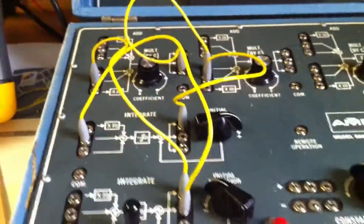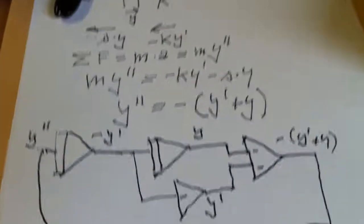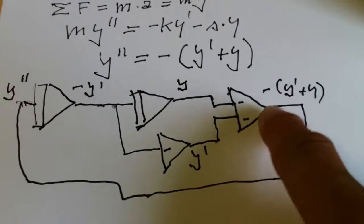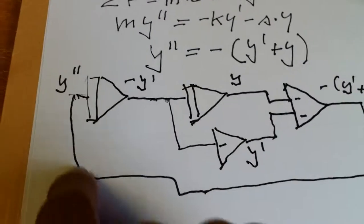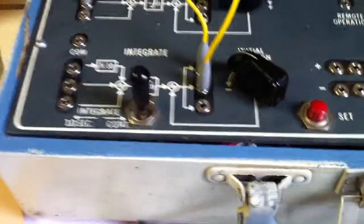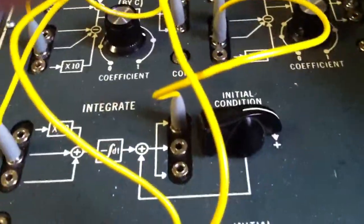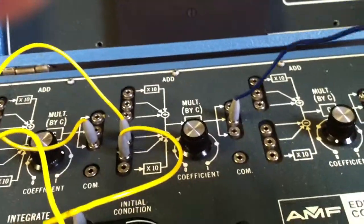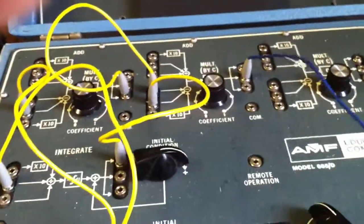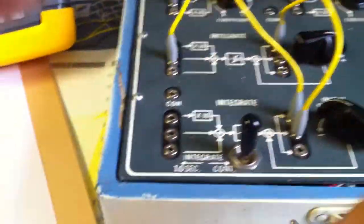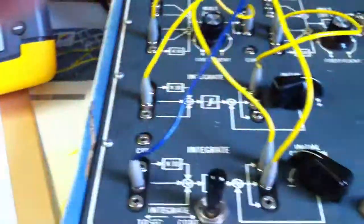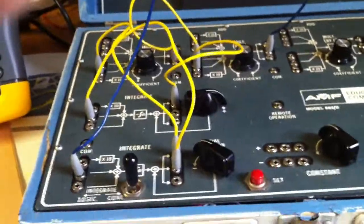So, all these yellow cables now define this structure. What's missing is the loop back to the first integrator. Now, I will take a blue cable and go back from this second adder to the input of the first integrator. Now, the system is ready.